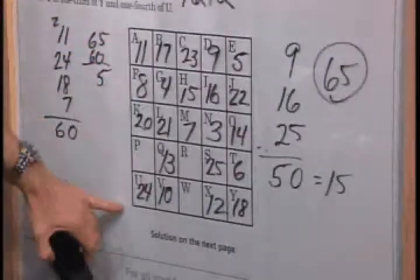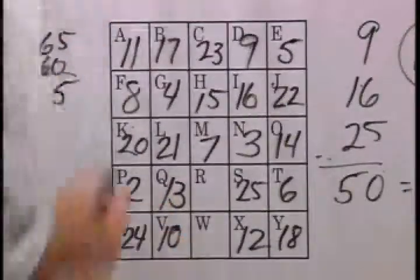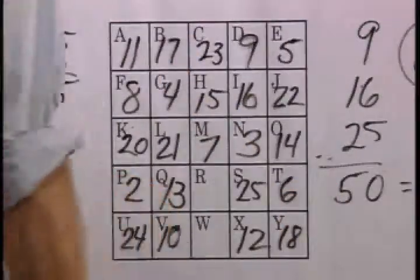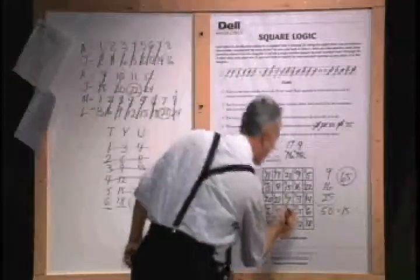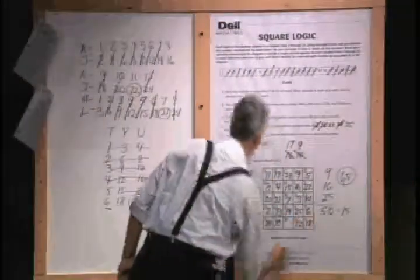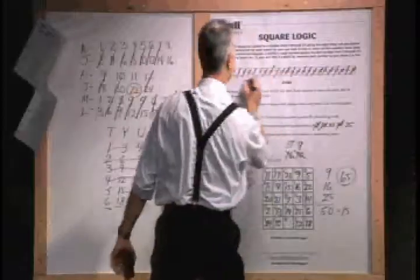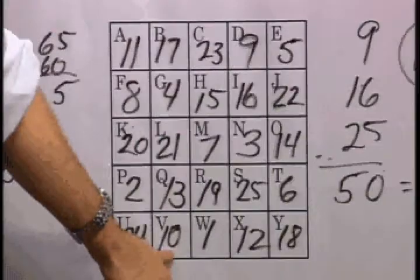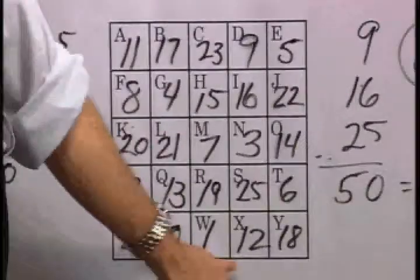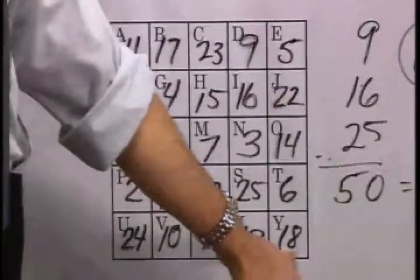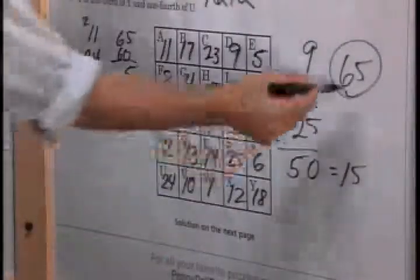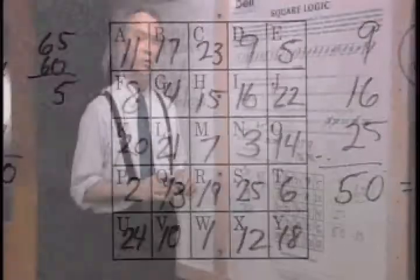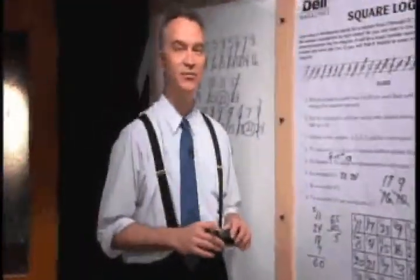We now have 4 of the numbers here. P then has to be 2. And these 2 numbers become quite obvious here as to how we have to fill those in. 19 will give us the 65, leaving the 1 at the bottom. And we can double check that. 24 and 10 is 34, 1 is 35, 12 makes 47, and 18 makes that magical number 65. And with that, we have completed our square logic puzzle. We'll be right back with more of the Puzzle Detective right after this.